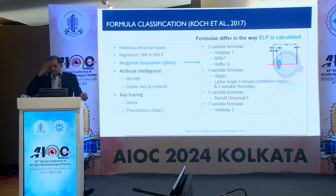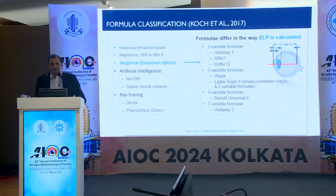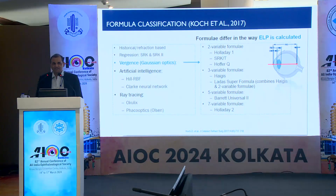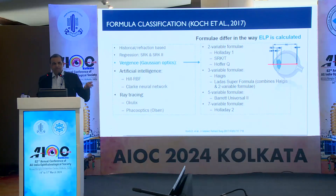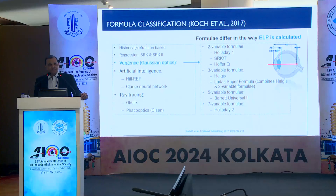Dr. Douglas Cook in 2017 came with a classification: the historical regression-based formulas like SRK and SRK II — we are not using those now. Then formulas based on Gaussian optics, initially thin lens formulas considering different variables. The initial third-generation formulas considered axial length and keratometry. Over time, Dr. Haigis introduced the concept of anterior chamber depth as a third variable, Dr. Barrett added more variables like white-to-white and lens thickness, and Dr. Oladeji incorporated the age and refraction of the patient, adding more variables to the effective lens position calculation.